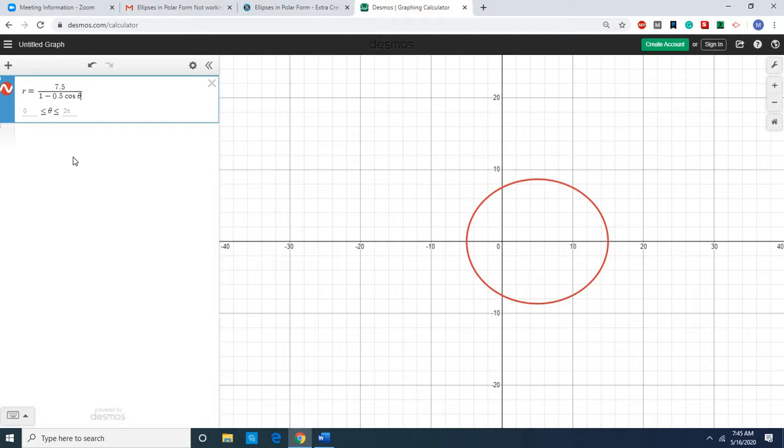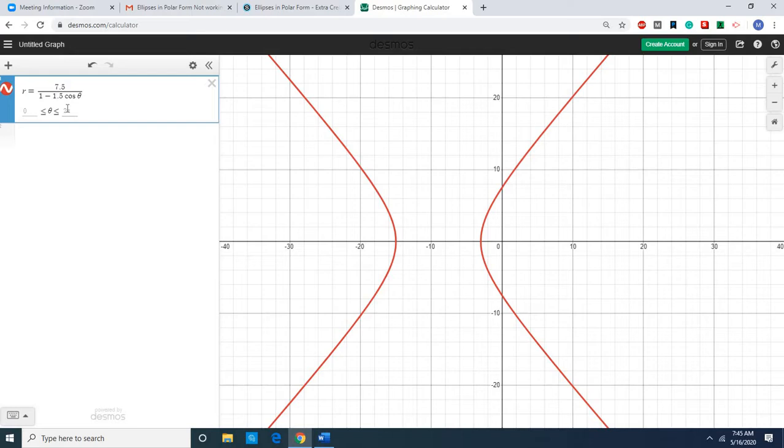So that is the way to do this. Now you can change things. Watch what happens if we change this. We no longer have an ellipse. We now have a hyperbola.